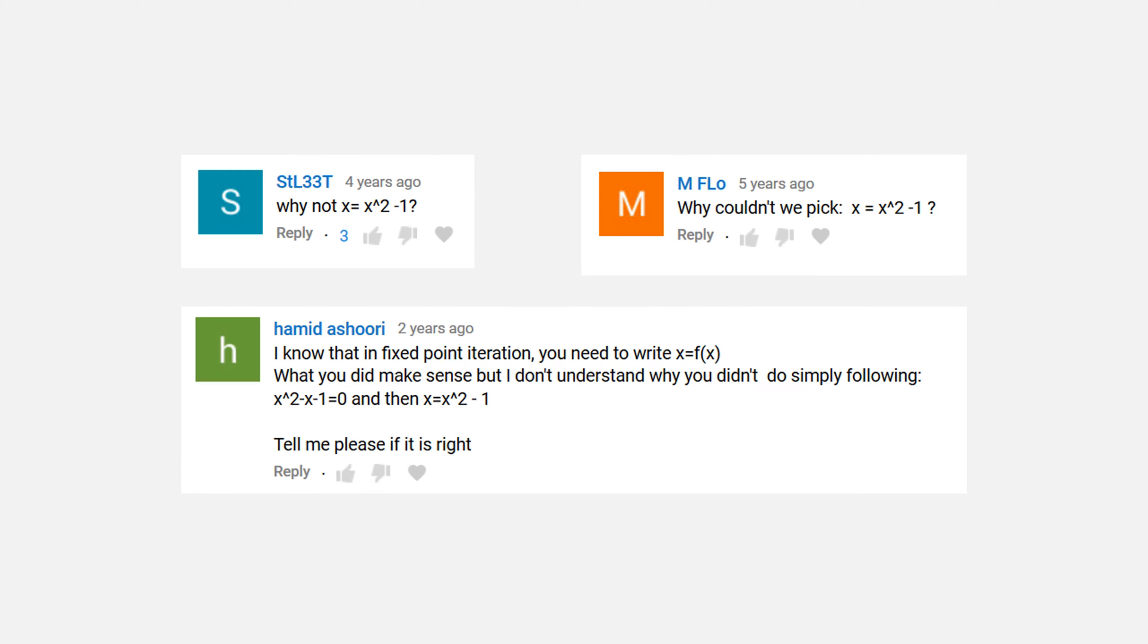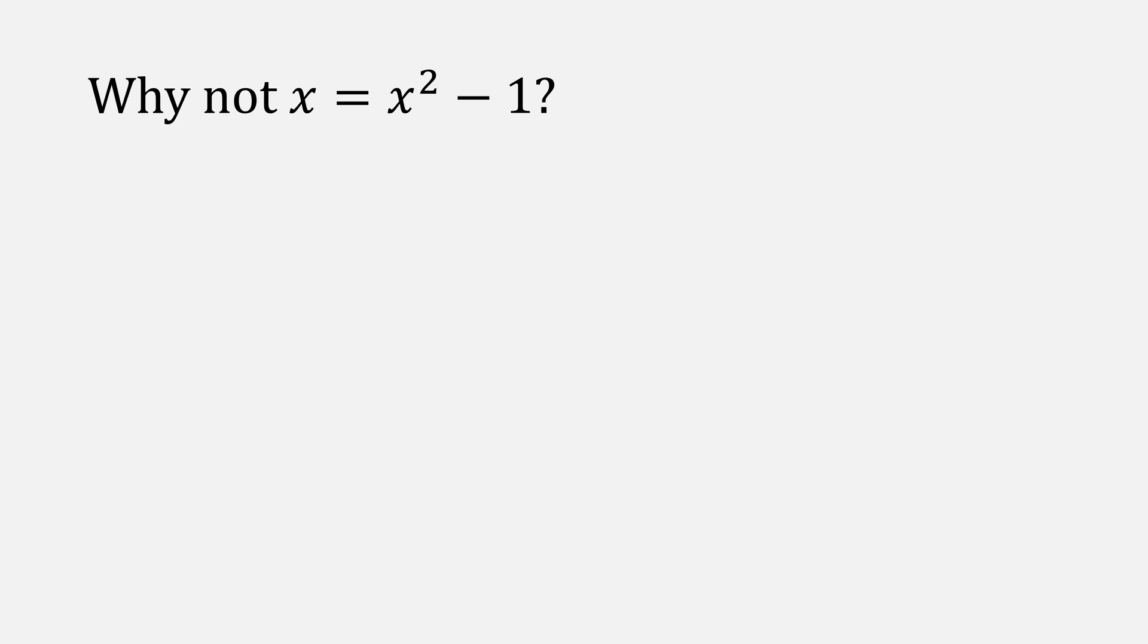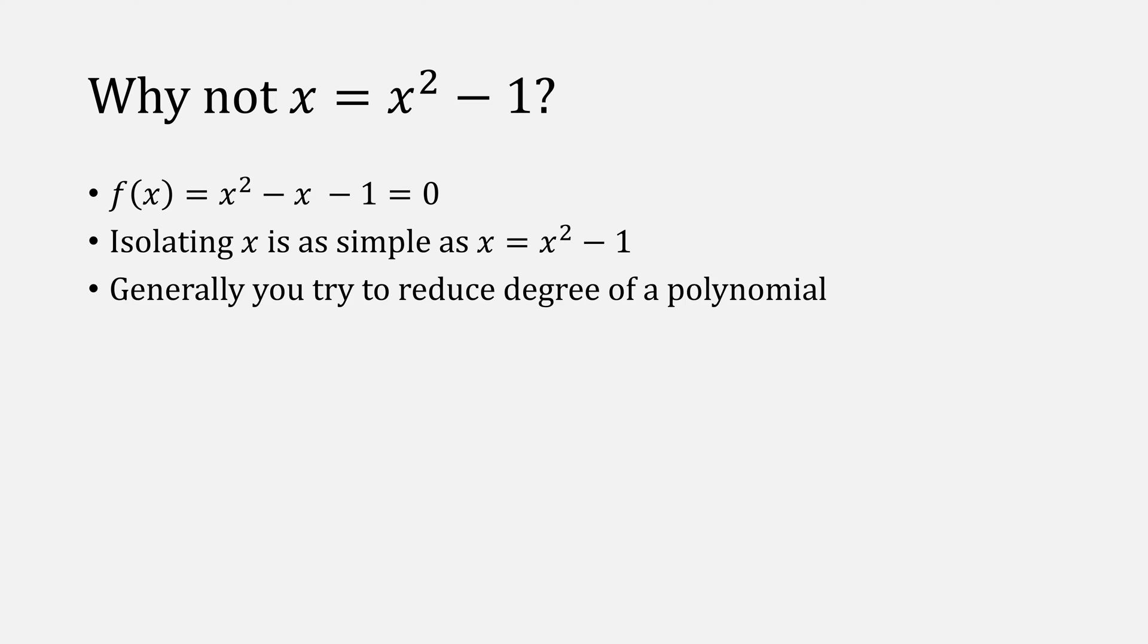The first question we'll go over is, why not choose x equals x squared minus 1? With our function being x squared minus x minus 1, it seems like the easiest way to isolate x would be to simply move it to the left. But as a rule of thumb, you want to try to reduce the degree of the polynomial that you're trying to find the root for. So x squared minus x minus 1 has a degree of 2, as does x squared minus 1.